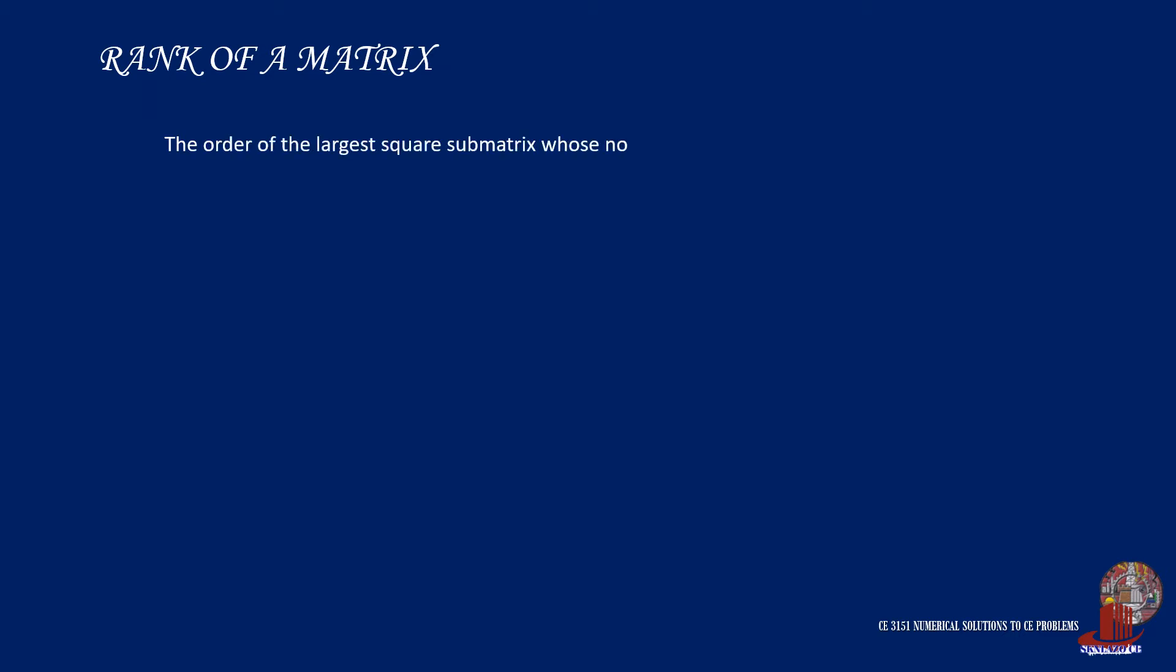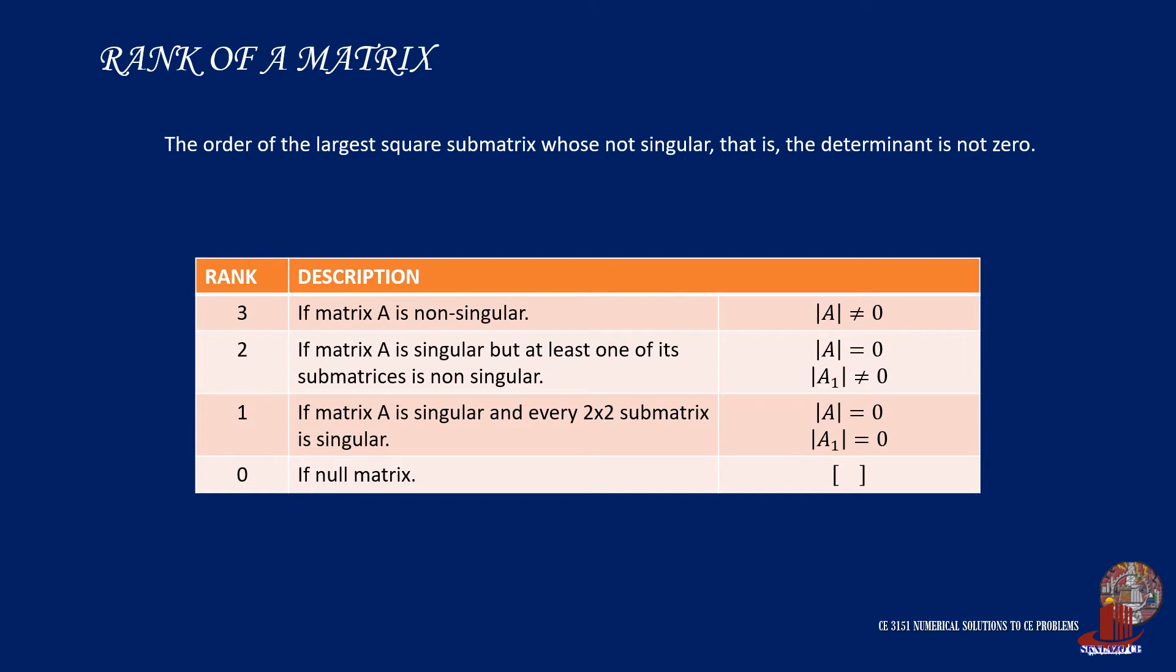There is a criteria in determining the rank of a matrix. Rank 3 is given to a matrix if it is non-singular, meaning its determinant is not equal to zero. A matrix is rank 2 if its determinant is zero but one submatrix comes out to be non-singular. Otherwise, the matrix will be rank 1. A null matrix, meaning there is no element in it, is rank 0.